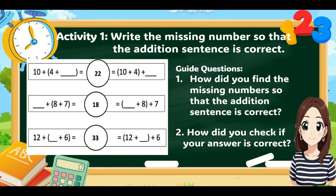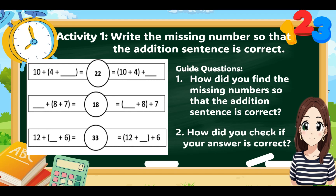For Activity 1, write the missing number so that the addition sentence becomes correct. For the first set: 10 plus 4 plus blank equals 22. Let's add 10 plus 4 to get 14, then find how many more we need to reach 22. The answer is 8. To check, 22 minus 14 equals 8, so 10 plus 4 plus 8 equals 22.